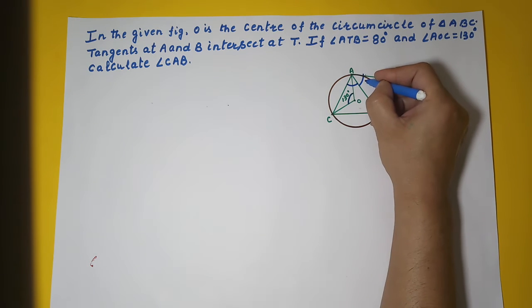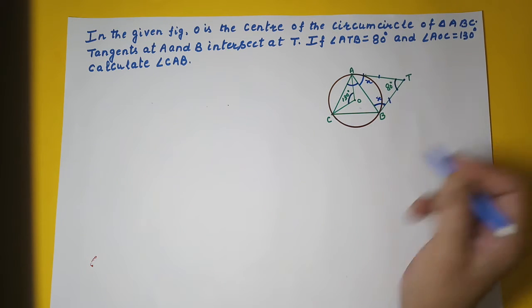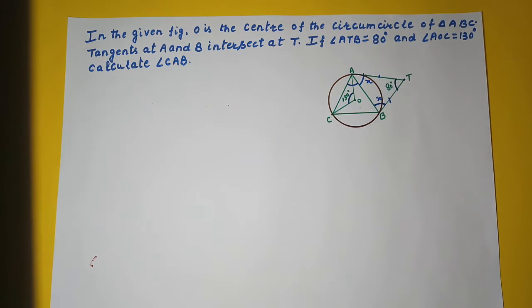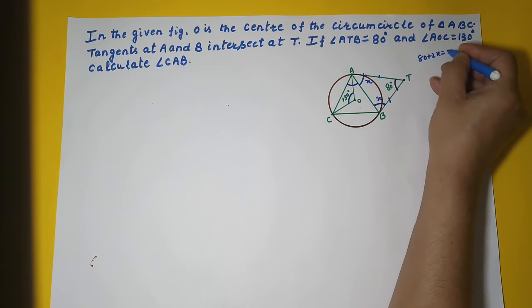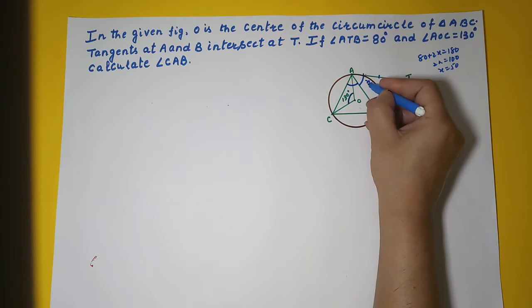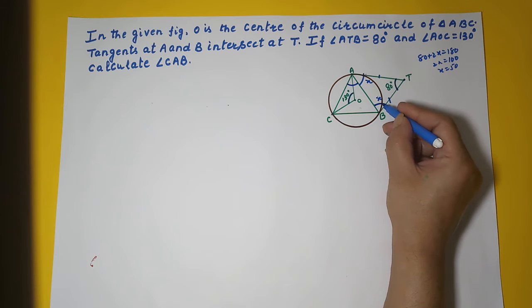So let this be X, then this will also be X. So we will calculate this X. 80 plus 2X equal to 180, so 2X equal to 100, so X equal to 50. We got this angle as 50, this angle as 50.